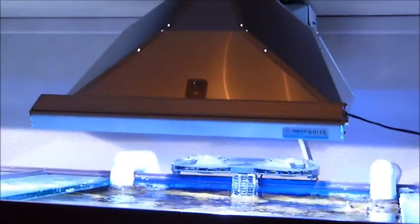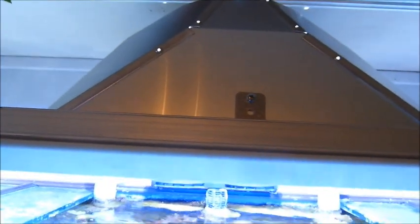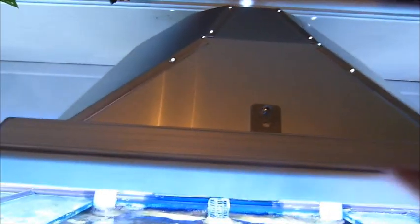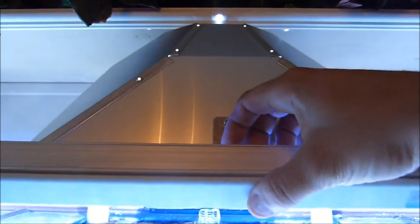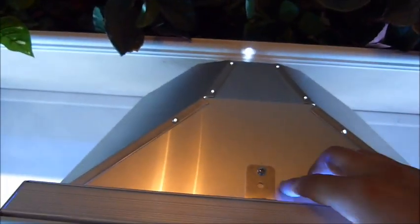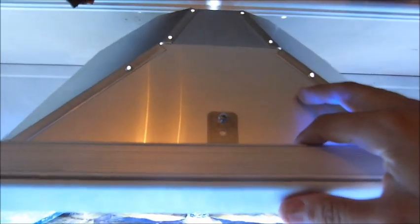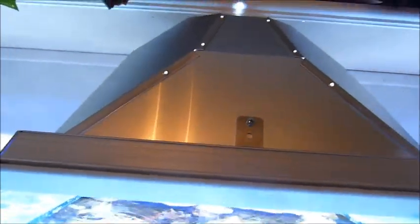Here's the Reefbrite mounted to the reflector and this was really easy. All I did was find the center of the 15 inch, which is not exactly 15, it's actually a little shy of 15 inches. I found the center and drilled a hole through the center of it in the back here, and then I've lined this up with the reflector where I wanted the light to be.